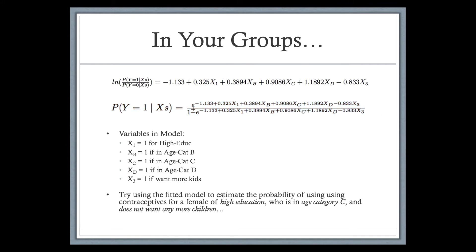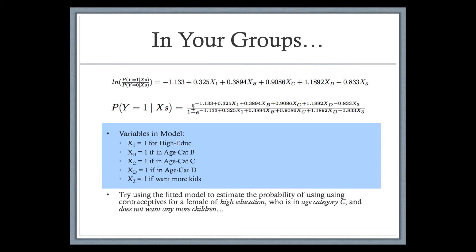The variables in this model are: x1 equals 1 if education is high; xb equals 1 if they're in age category b; xc equals 1 if they're in age category c; xd equals 1 if they're in age category d; and x3 equals 1 if they want more kids, and 0 if they do not.